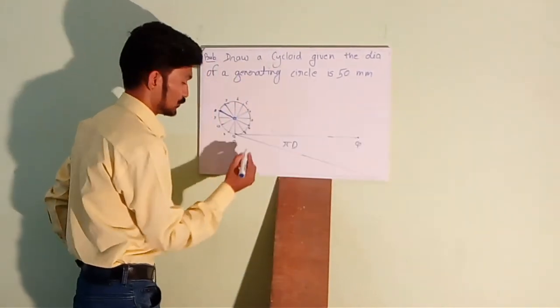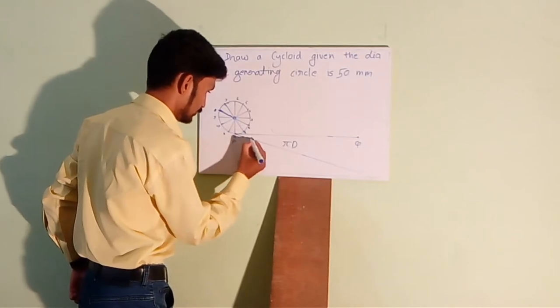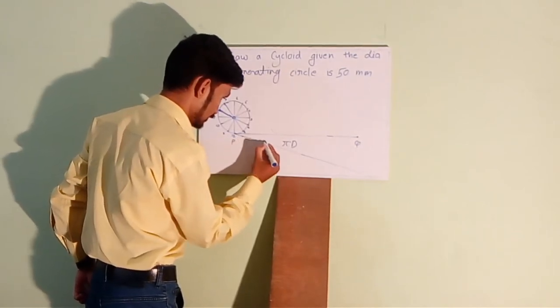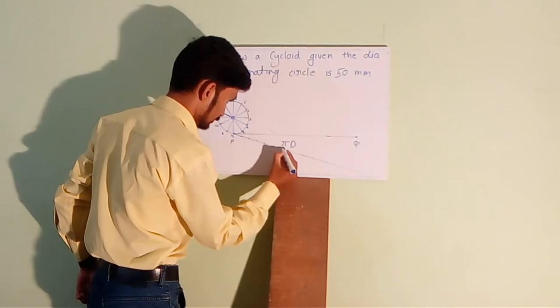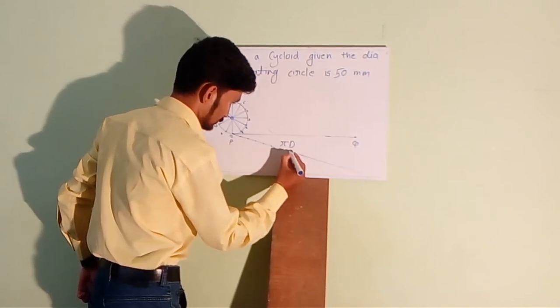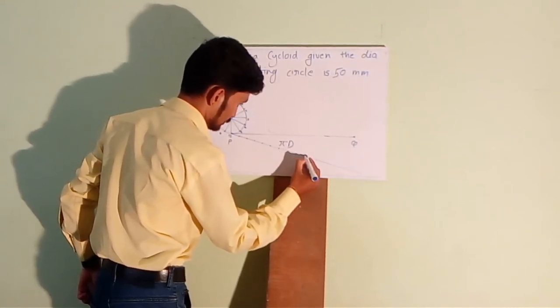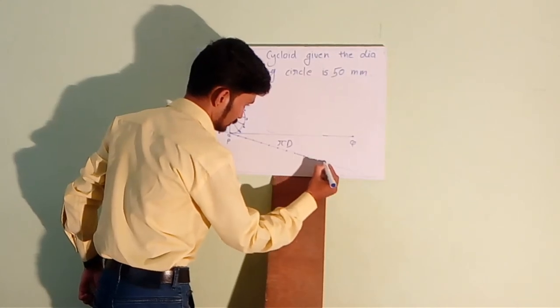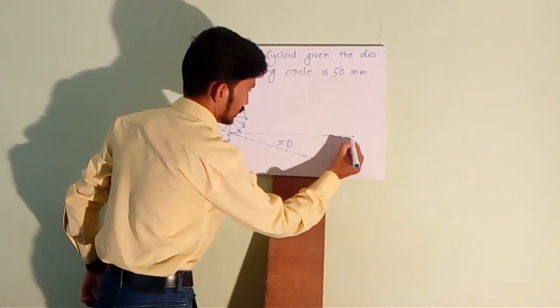Cut this line into 12 equal parts, cut 12 equal arcs: 1, 2, 3, 4, 5, 6, 7, 8, 9, 10, 11 and 12.